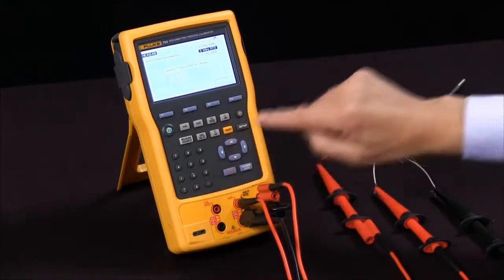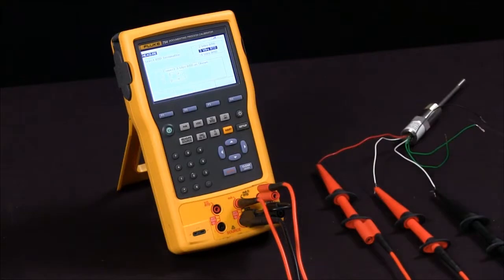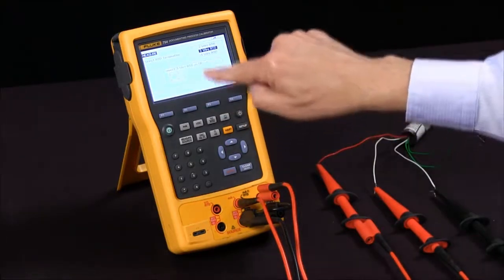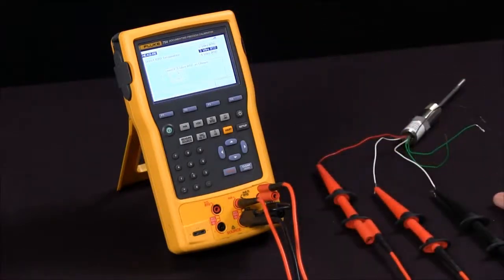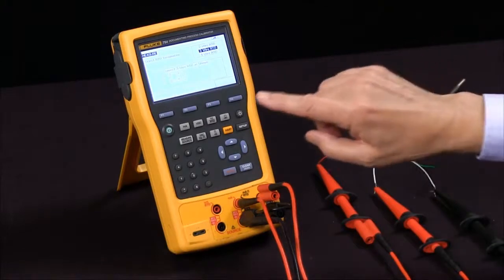So this particular one we're going to use today is a three wire RTD. And there's the connection diagram. We've connected it up here and connected to the leads. So we're ready to actually measure this RTD.